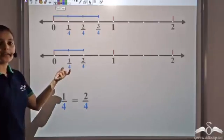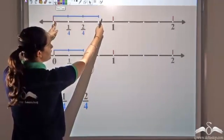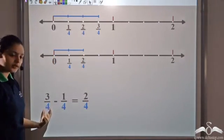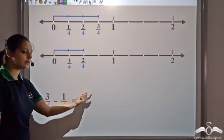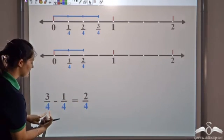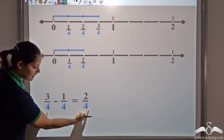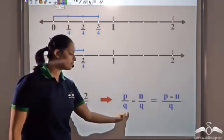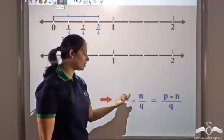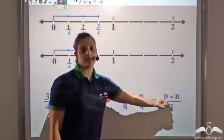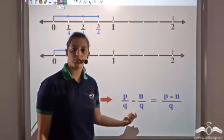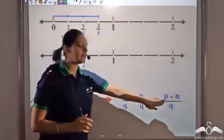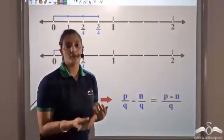Similarly, if I want to subtract — say I have length 3/4 and I subtract 1/4 from it — I am left with 2/4. So 3/4 minus 1/4 gives 2/4. The denominator remains the same, and the numerator is being subtracted. So if the denominator is the same, I just subtract the numerators. That's how I can subtract two rational numbers. If the denominator is the same, we can add and subtract easily.